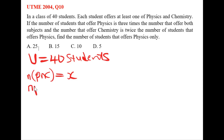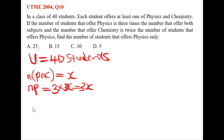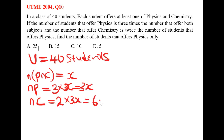The number of students that offer physics is three times the number that offer both subjects, which is 3x. Then the number that offers chemistry is twice the number of students that offer physics, which is 2 times 3x, equal to 6x.